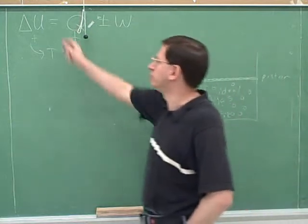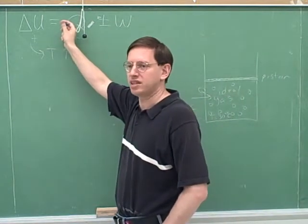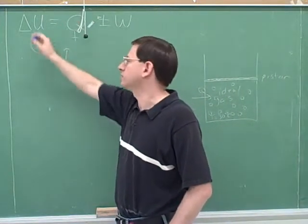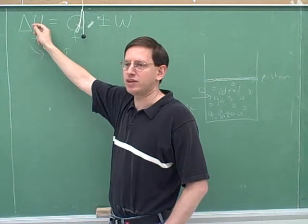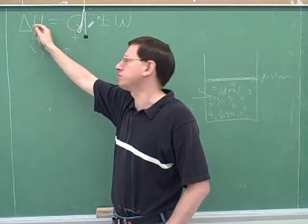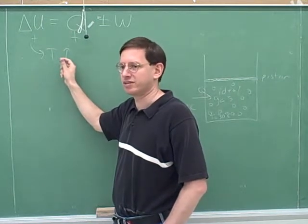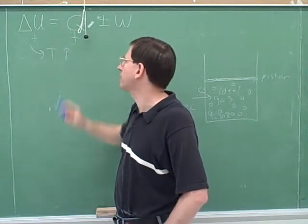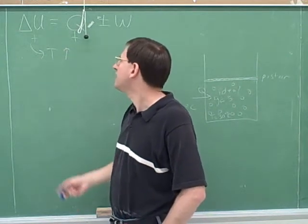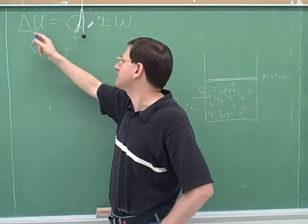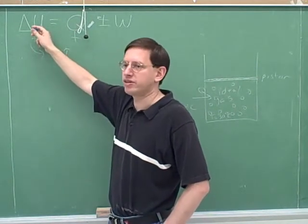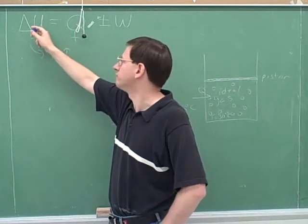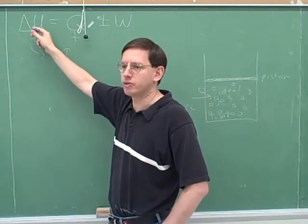Which is just in accord with our common sense — we would expect that the temperature would be going up when we're in contact with something that's hotter. On the other hand, if we were removing heat, then this Q would be negative, which would tend to make delta U negative, which would tend to indicate that the temperature is going down. This part of the fundamental law of thermodynamics is kind of common sense: if you add heat, that raises the energy and raises the temperature; if you remove heat, that removes energy and lowers the temperature.